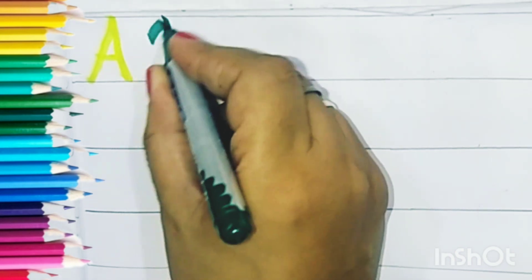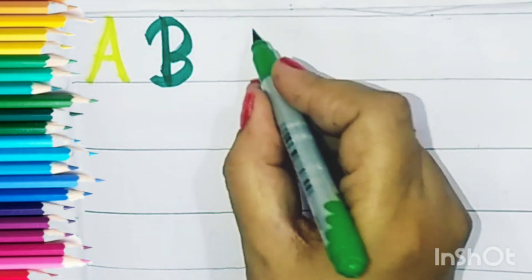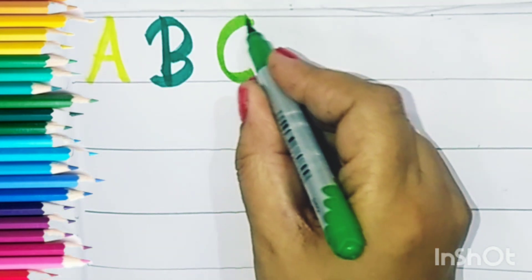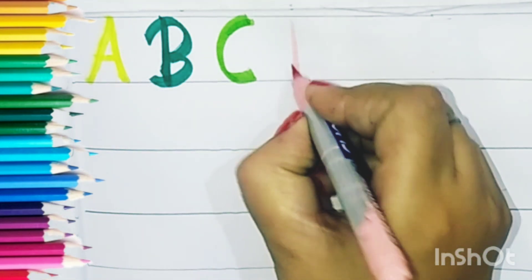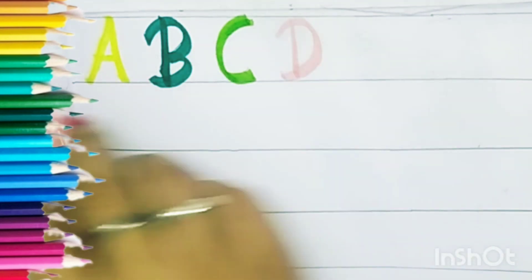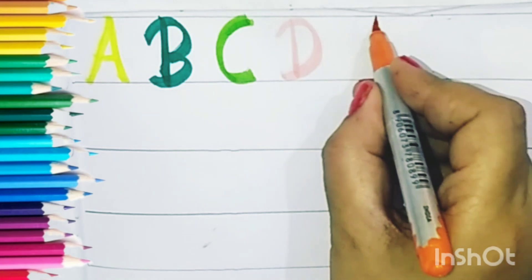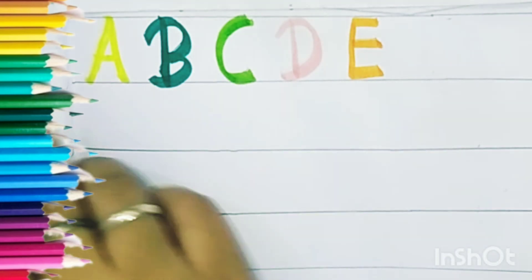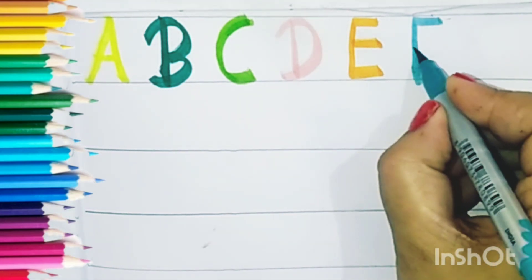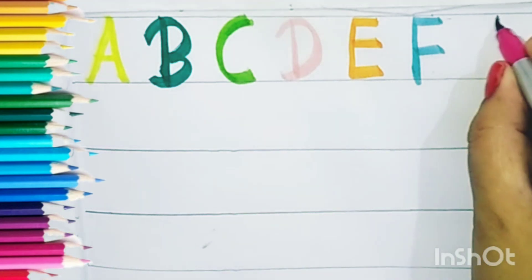B for ball, C for cat, D for dog, E for elephant, F for fish, G for girl.